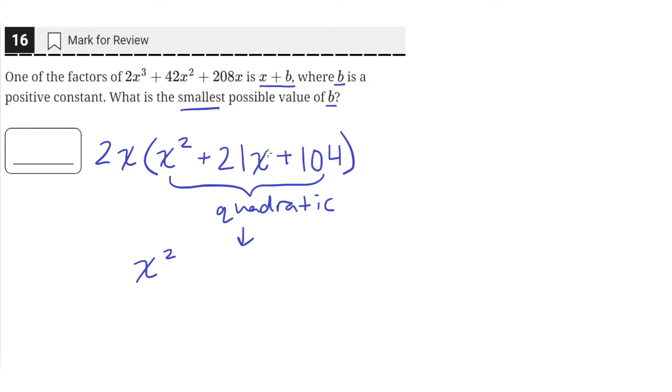So we need to split this middle term into two terms whose coefficients, when multiplied together, will equal 104. So those two numbers are 8 and 13.